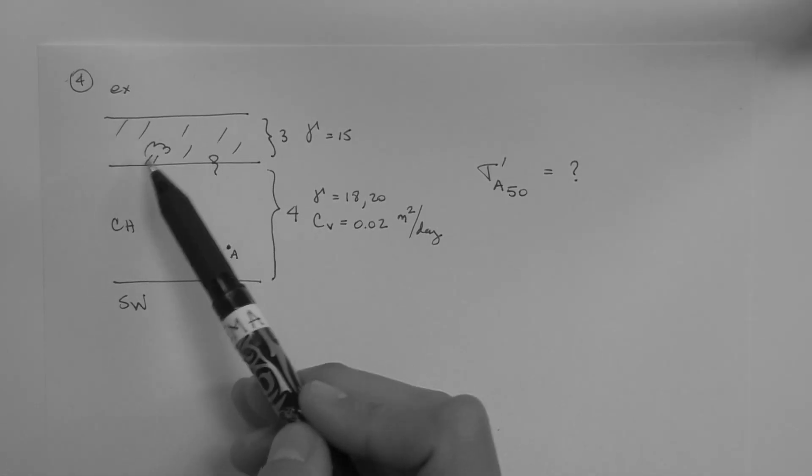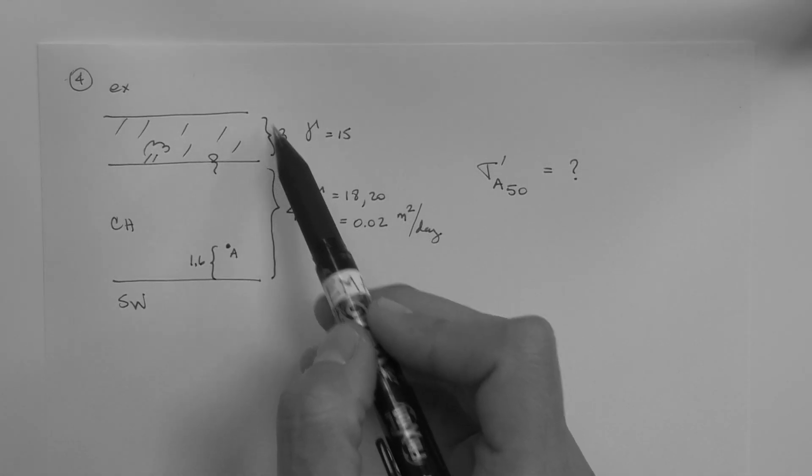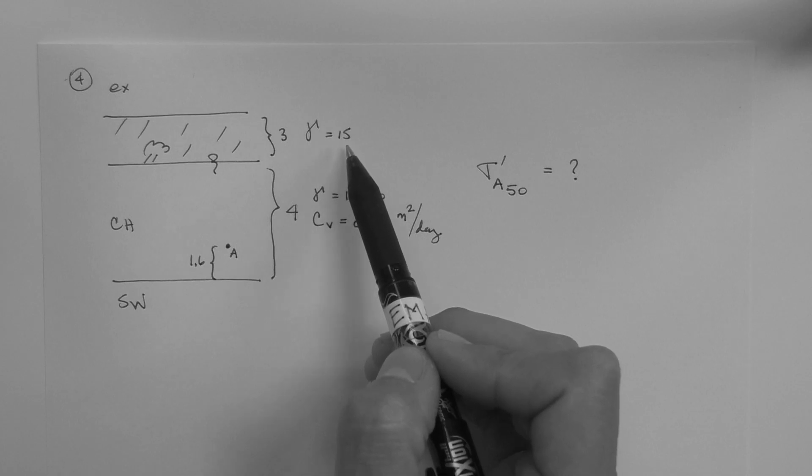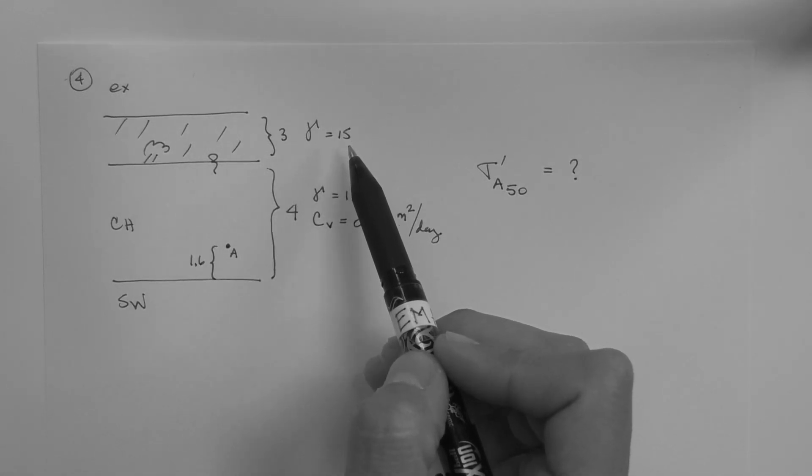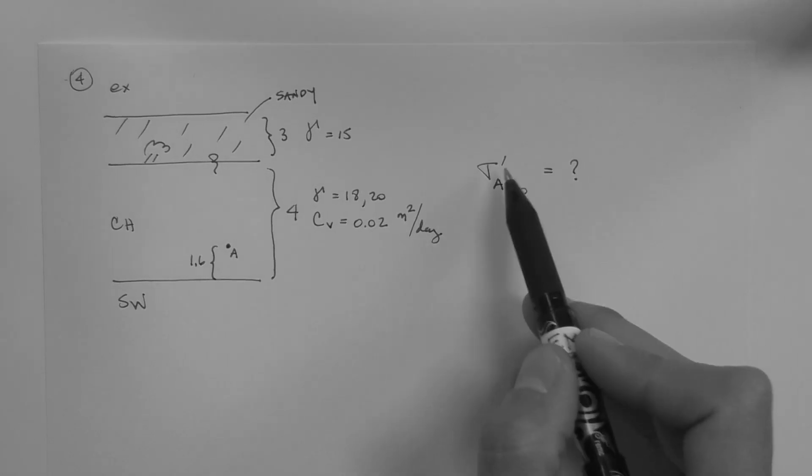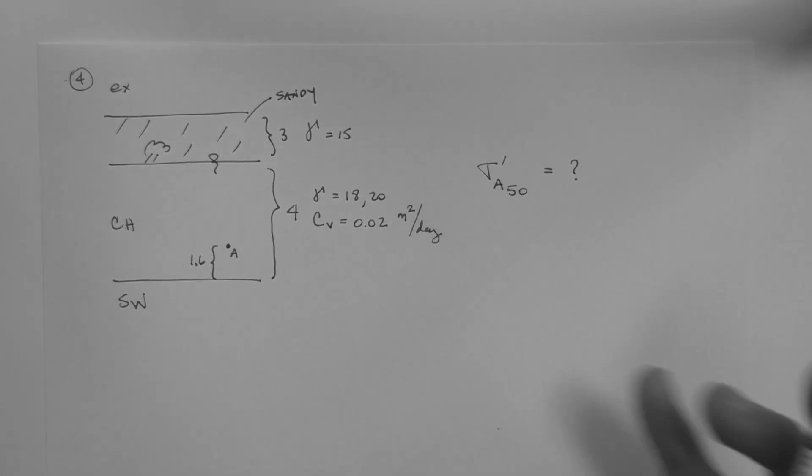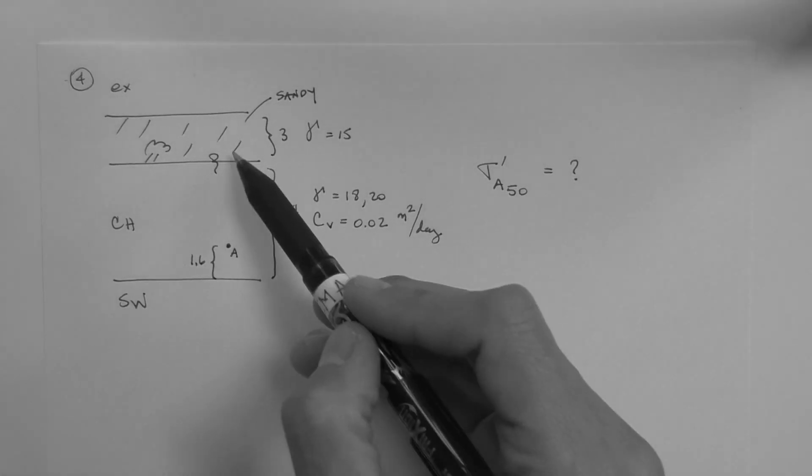We're going to place a fill on top of the ground surface that has a height of 3 meters and its unit weight, that is of the soil that makes it, is 15 kN per meter cubed. Let's say that the fill is sandy and the question is what is the effective stress at point A, vertical effective stress, 50 days after placement of the fill.